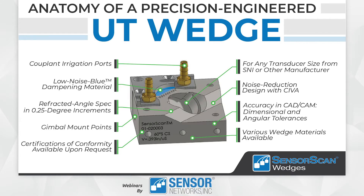Coupled with that, there are a lot of other options you can get with the wedge. You can have irrigation ports, different gimbal mounting situations. And when we manufacture these wedges, we're actually using 5-axis CNC mills to precision machine the surfaces of the wedges and all the mechanical features.